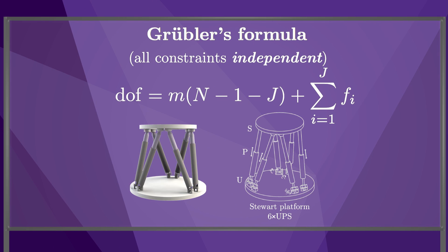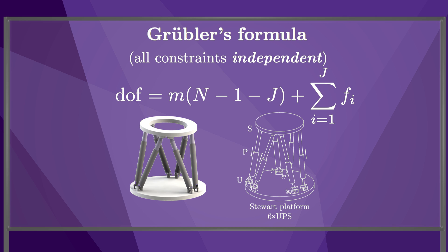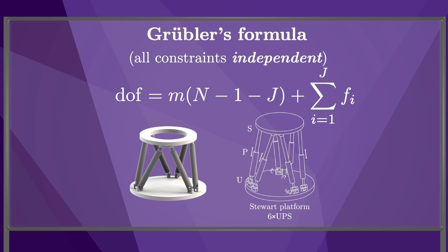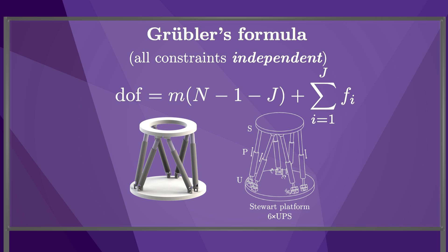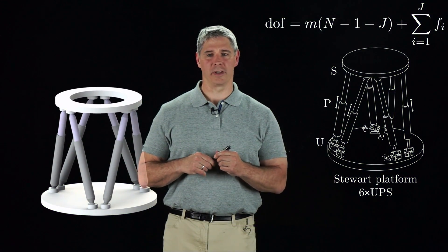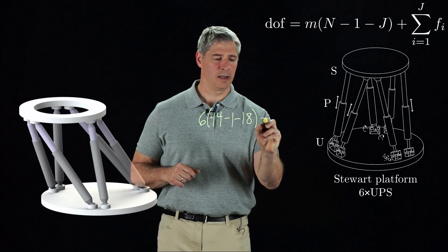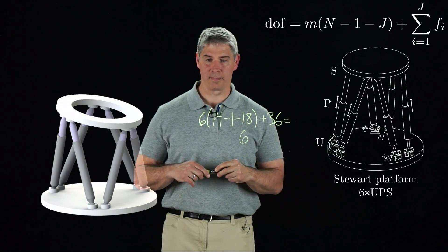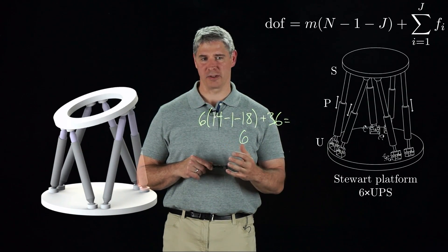Finally, we have a spatial closed-chain mechanism called a Stewart platform. It has six legs connecting the bottom platform to the top platform, and each leg consists of two links, a universal joint, a prismatic joint, and a spherical joint. The prismatic joints are actuated, creating motion of the top platform. Since each leg has two links, there are 12 links in the legs, and adding ground and the top platform makes 14 links total. Each leg has three joints with six degrees of freedom total, for 18 joints with 36 total freedoms. The mechanism moves in three-dimensional space, making m equal to six. Grubler's formula tells us: 6 times (14 minus 1) minus 18 plus 36 equals six degrees of freedom. The top platform can be moved with all six degrees of freedom of a rigid body. There are limits to the range of motion, of course, but these limits do not reduce the number of degrees of freedom.